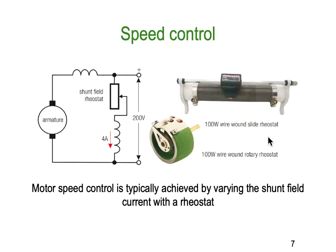Speed control. The best way to do speed control is by controlling the current through the field. We could control the current through the armature, but the current through the armature is normally very, very high — as you can see from our last example, it gets up in the order of 400 amps — where the field is only about 4 amps. So we tend to put the speed control in the field. You can see here a wound wire rheostat. We've got one end of the resistor here, the other here, and the common is up here. As we slide this backwards and forwards, we can vary the amount of windings in the resistor and therefore control the value of resistance. That's a 100-watt wire-wound slide rheostat.